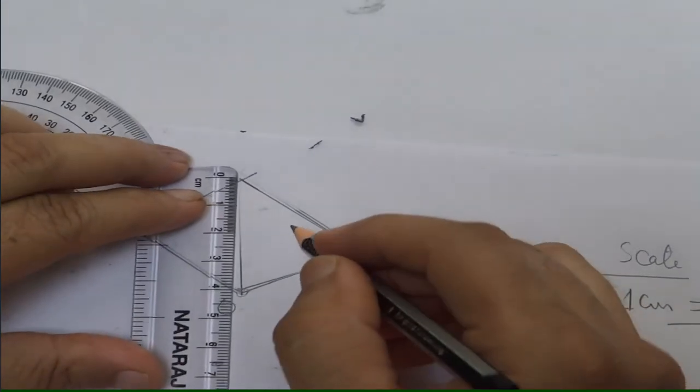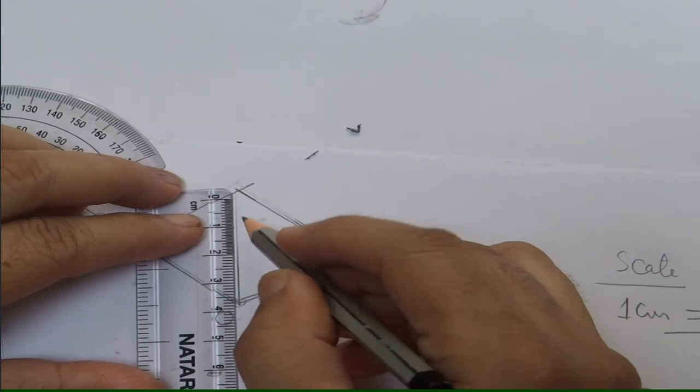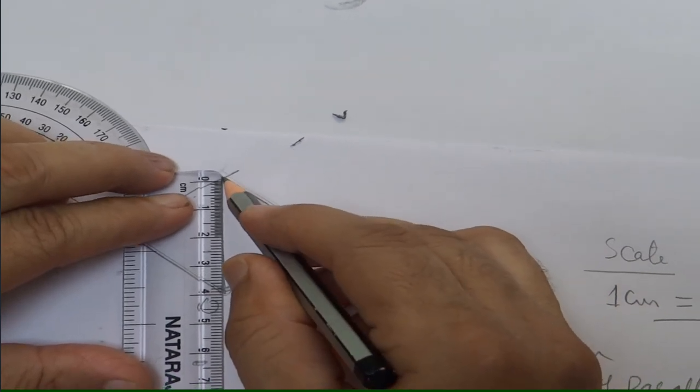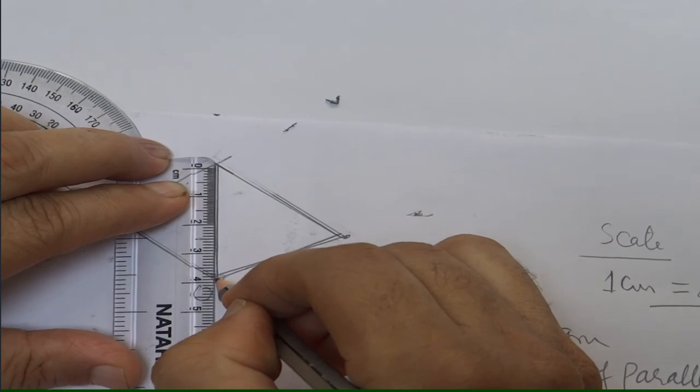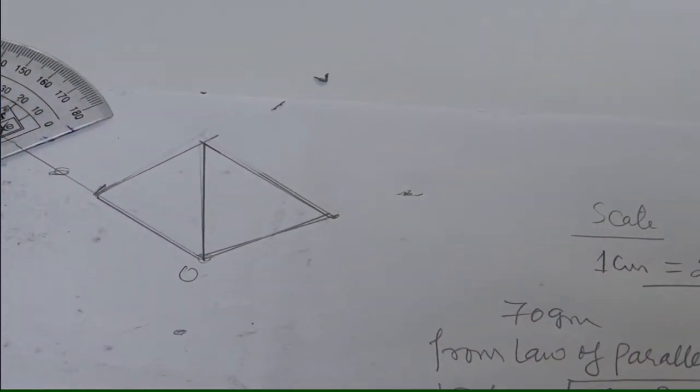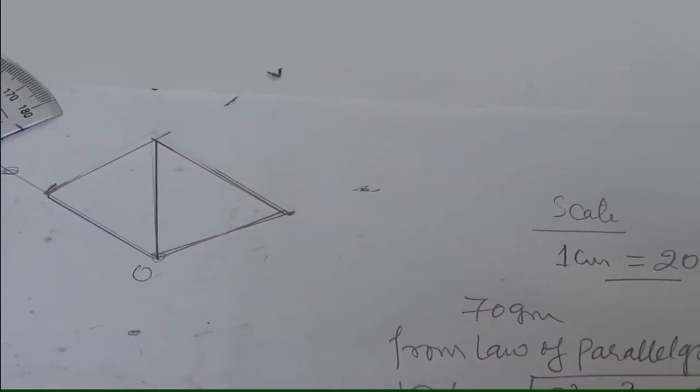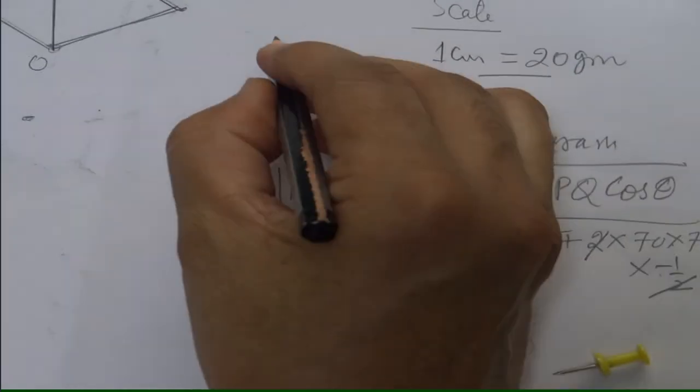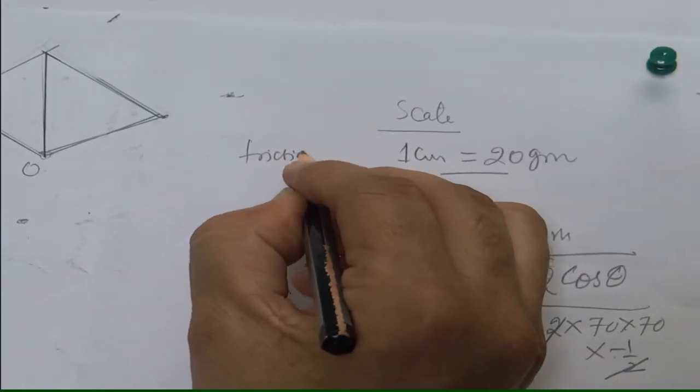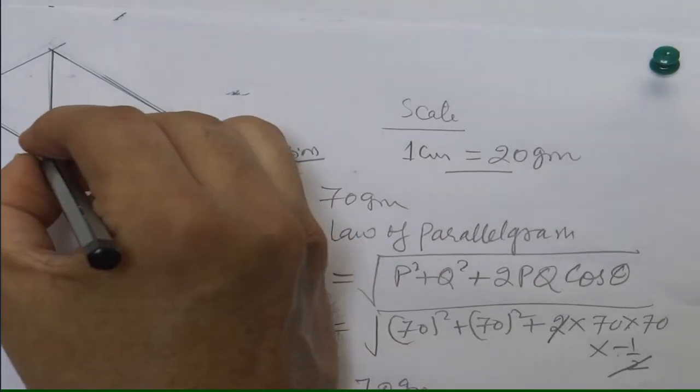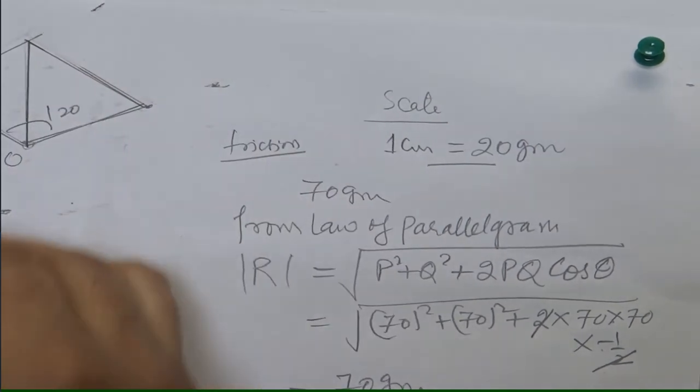Now diagonal is this. You see the diagonal is almost same line. This is 3.6. There is little variation in this because of the friction between the pulley and the thread. This is 120 grams.